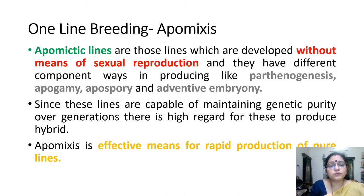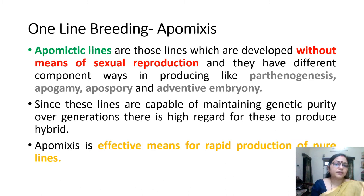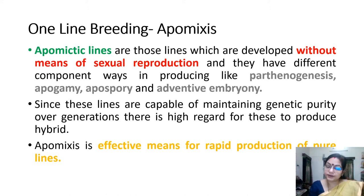What is one-line breeding? One-line breeding is an approach in which only one individual is applied, and it may involve reproduction without sexual reproduction. So the one-line breeding approach applies apomixis. Apomictic lines are those lines which are developed without means of sexual reproduction, and they have different component ways of producing, like parthenogenesis, apogamy, apospory, and adventive embryogamy.